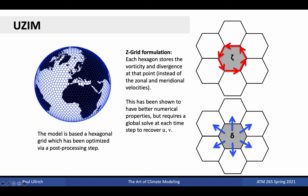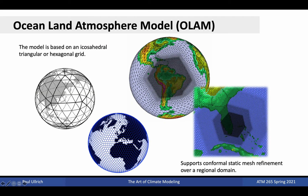On the topic of grid staggering, the Colorado State University USIM model also avoids issues with checkerboarding through the employ of completely different velocity variables. In particular, rather than storing the components of the velocity vector, the USIM model stores the relative vorticity and divergence of the flow as cell-average quantities. This has been shown to have good theoretical performance. In fact, many global modeling systems now use meshes consisting of hexagonal grid elements, including the OLAM model, which is employed primarily by the U.S. Environmental Protection Agency. OLAM supports both triangular and hexagonal cells, and supports variable resolution through its grid generator toolset.